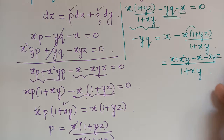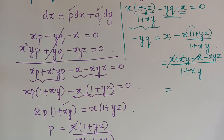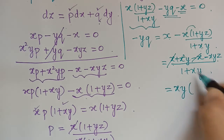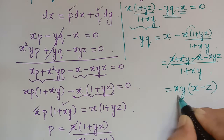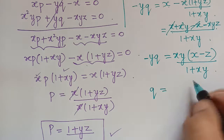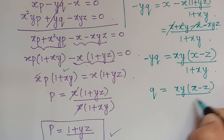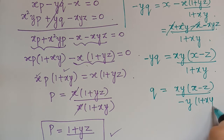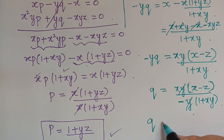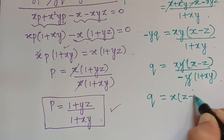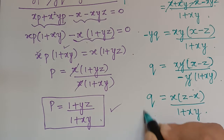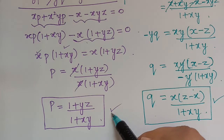Expanding gives X + X²Y minus X minus XYZ, where plus X and minus X cancel. Taking XY as common factor from the remaining terms gives XY(X minus Z) / (1 + XY). So minus YQ = XY(X minus Z)/(1 + XY), and dividing both sides by minus Y gives Q = X(Z minus X)/(1 + XY). We now have both P and Q.